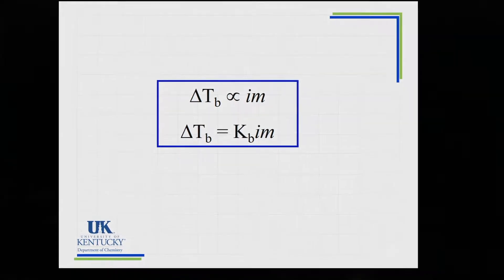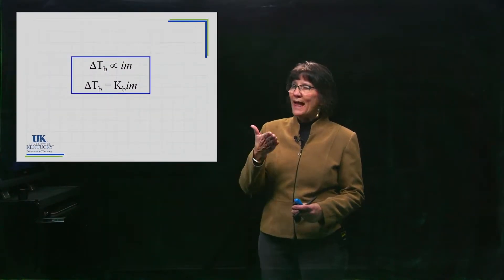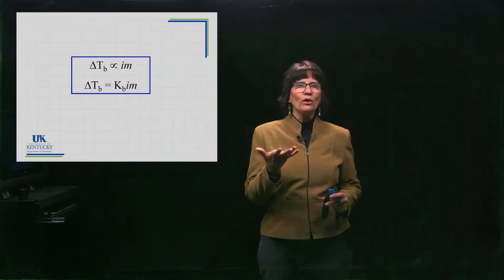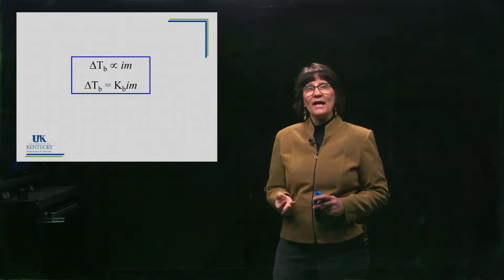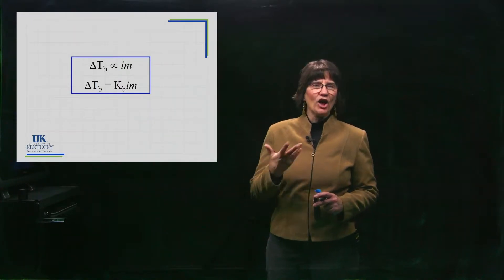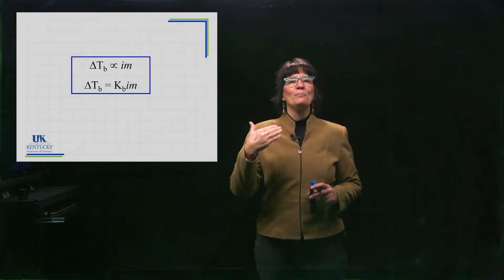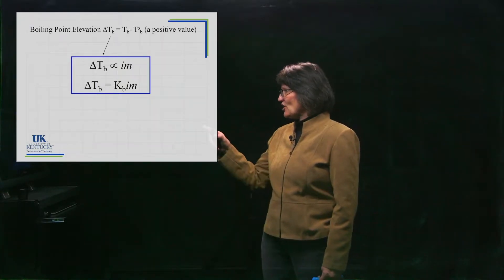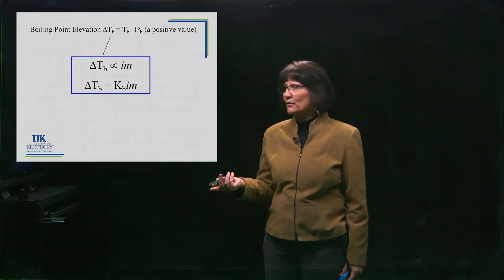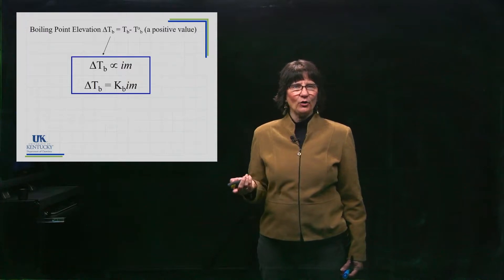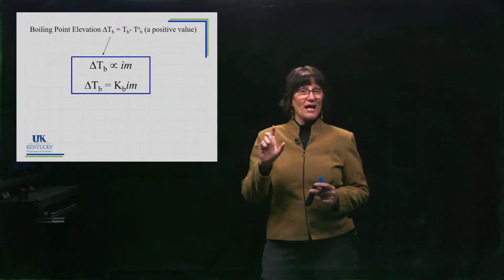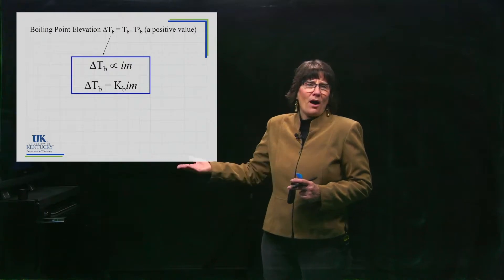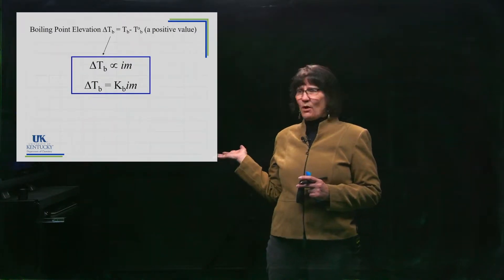Here is the relationship. The change in temperature of the boiling point is proportional to molality — and it's molality of particles, so we see the van't Hoff factor in there. To turn a proportionality into an equality, we add the boiling point elevation constant. That delta T is always a positive value, representing how much the boiling point is being elevated. I can't make the equation equal if one side is positive and one side is negative.